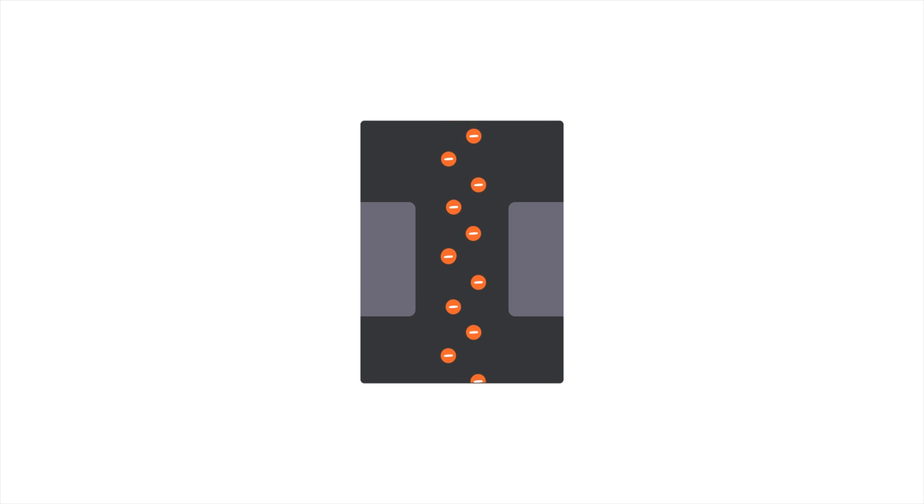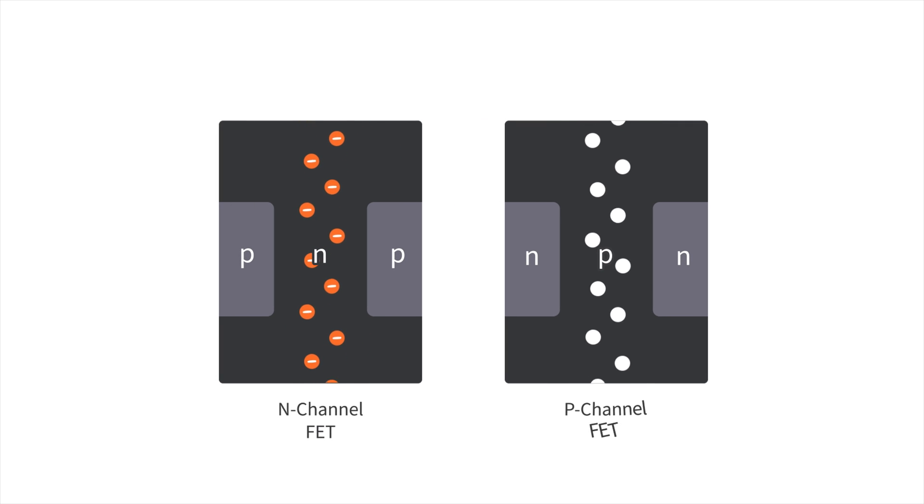Let's start by identifying the different parts of a field effect transistor. In all FETs, the path of flow of the charge carriers in the device, either electrons or holes, is known as the channel. If the channel is made up of an n-type semiconductor material, it's known as an n-channel FET. Similarly, a p-channel FET's channel material is of a p-type semiconductor.